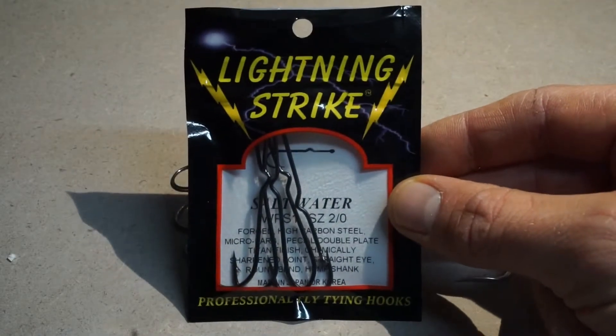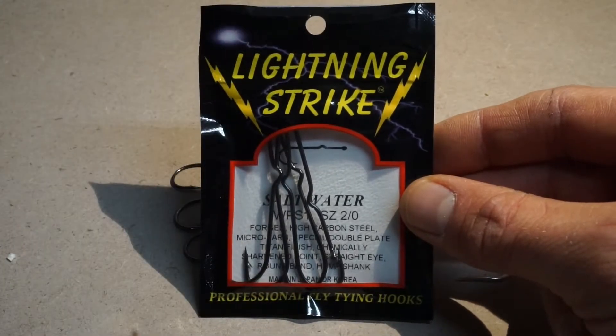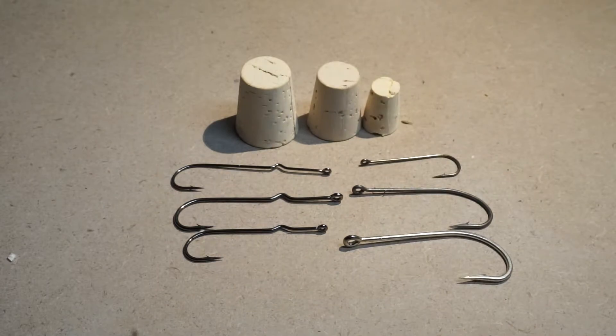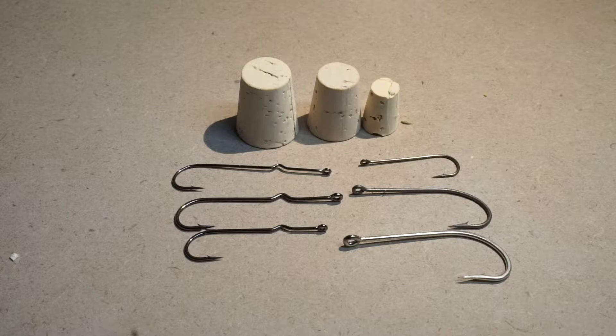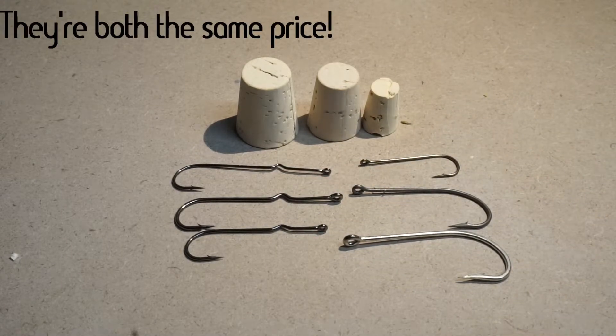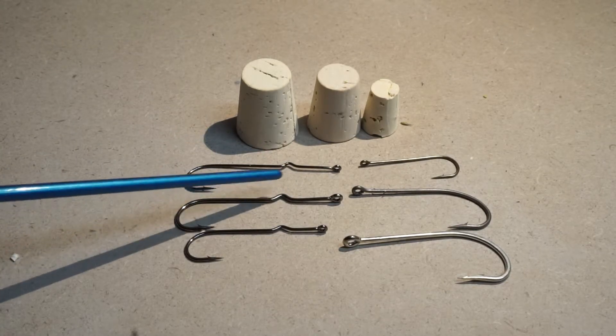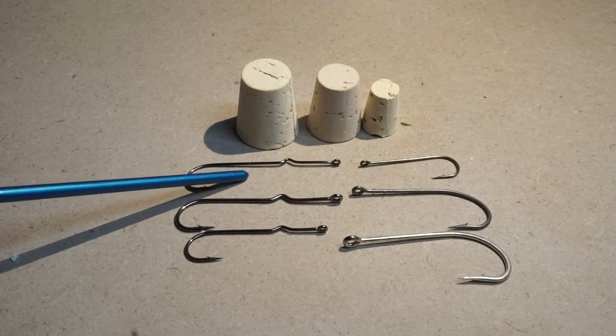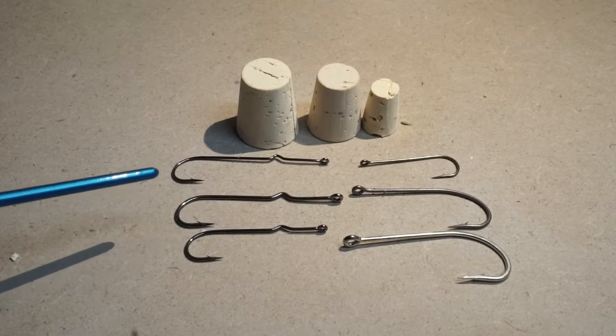They make them in both saltwater and regular like freshwater sizes. The freshwater ones come in sizes one and sizes four, I believe. And the saltwater ones come in two and two-oh. I would skip the freshwater ones completely. I think that they're really thin and if you're going for small fish, they might be okay. But this is a pretty big hook designed for a pretty big popper. And that is just not going to hold up in my experience anyways.